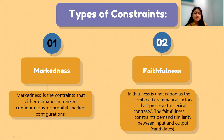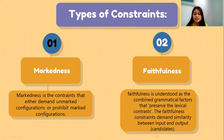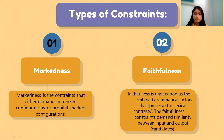As additional information about faithfulness, there are three categories. First, the output must present all segments in the input. Second, output segments must have counterparts in the input. Third, the output must preserve the linear order of segments from the input.